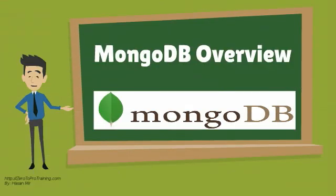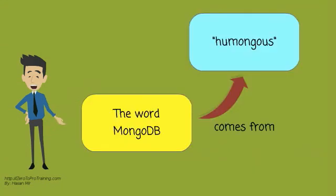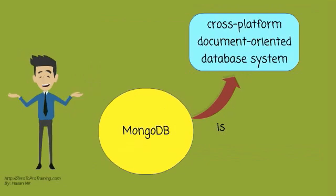In this video, we will talk about MongoDB Overview. The word MongoDB comes from Humongous. It is a cross-platform, document-oriented database system.